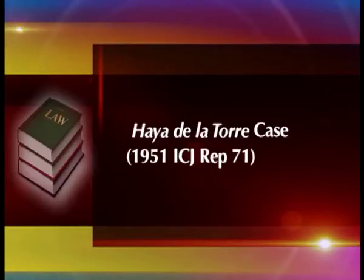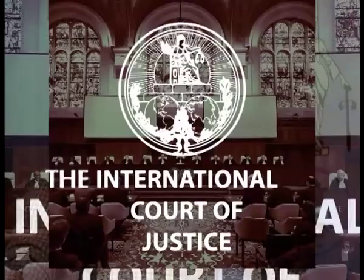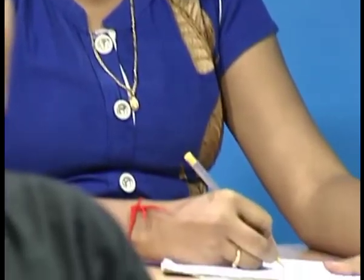In the Haya de la Torre Case, which also arose from the same facts, Peru demanded Haya de la Torre back from the Colombian embassy. The International Court of Justice, however, held that where asylum in legation premises has been given without justification, the head of the mission concerned is not obliged to deliver the fugitive to the local authorities in the absence of a treaty binding him to do so. Diplomatic asylum has frequently given rise to disputes. For example, after an unsuccessful uprising against the communist government of Hungary in 1956, the US controversially granted diplomatic asylum to dissident Hungarian Roman Catholic, Cardinal Mindszenty, who was given refuge in the United States Embassy and remained there for a period of 15 years.